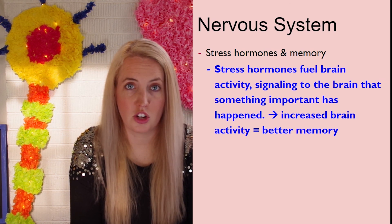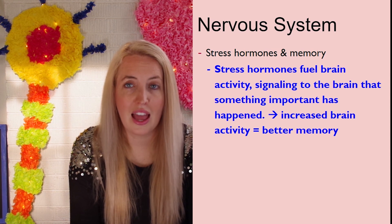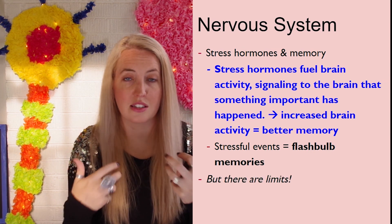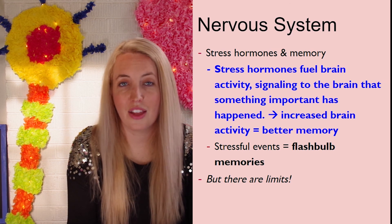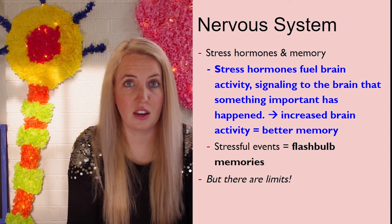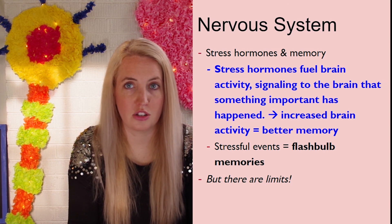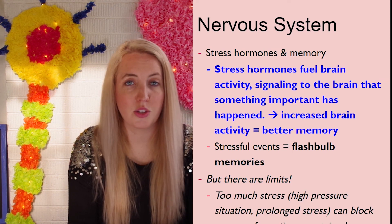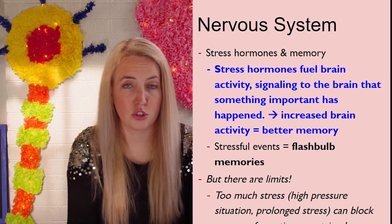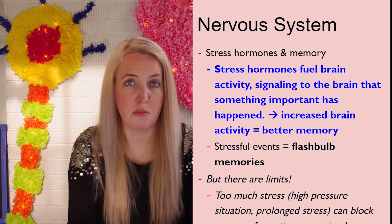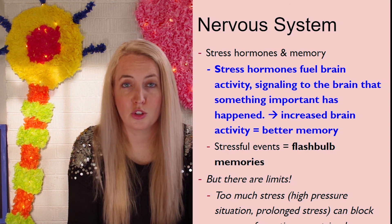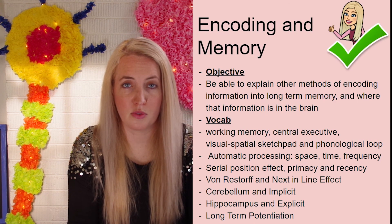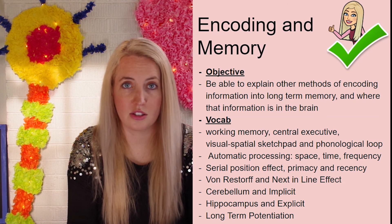The answer is stress hormones. When we're in an exciting situation, stress hormones are released throughout our body and alert our brain that something important is happening — essentially telling our mind to pay attention. That's part of why flashbulb memories are so vivid. However, too much stress can actually block memories, which is why someone who experiences prolonged stress or a traumatic event might not have a full memory of it afterwards. Stress can help our brain, but it can also harm it.